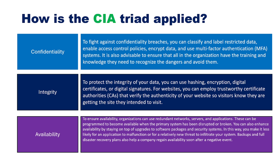To ensure that systems are available, organizations often use redundant networks. Instead of using one core switch, they will use another switch running in parallel — and the same goes for applications. Systems can be programmed to become available when primary systems are disrupted: when you have a primary and a secondary server, if the primary goes down, the user is automatically redirected to the secondary server. In most cases, organizations also depend on backups and disaster recovery systems, so that if a primary site is down, they can roll over to an alternate site to keep systems and services available to the end user.